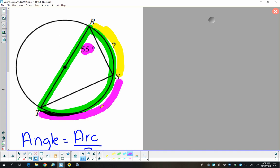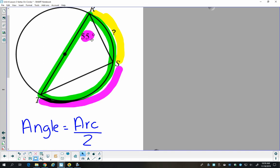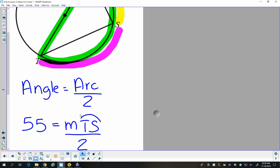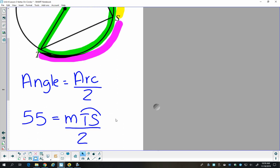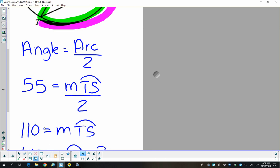That arc in purple and the arc in yellow make the semicircle. So if I find out what this purple arc is, I can subtract it from 180 to find the piece I'm looking for. So I'll use my inscribed angle to find arc TS. I'll plug into the formula. And I'll find that arc TS is 110.